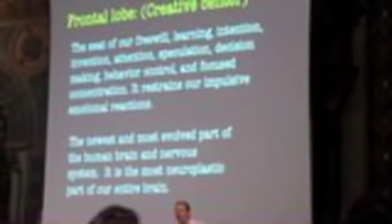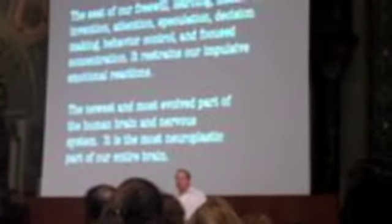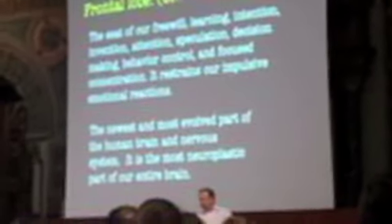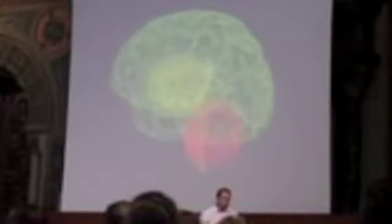And our frontal lobe is the seat of our free will. It's where we learn when we have intention. It's where we speculate possibilities and think about outcomes. It's our creative center. It also controls our emotional reactions. It's the newest, the most evolved part of the entire brain and nervous system. It is also the most neuroplastic part of the brain.